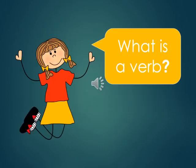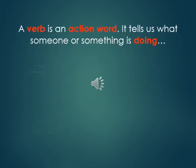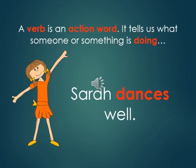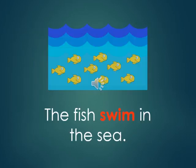So what is a verb? A verb is an action word. It tells us what someone or something is doing. The example here is: Sarah dances well. Here is another example: The fish swim in the sea.